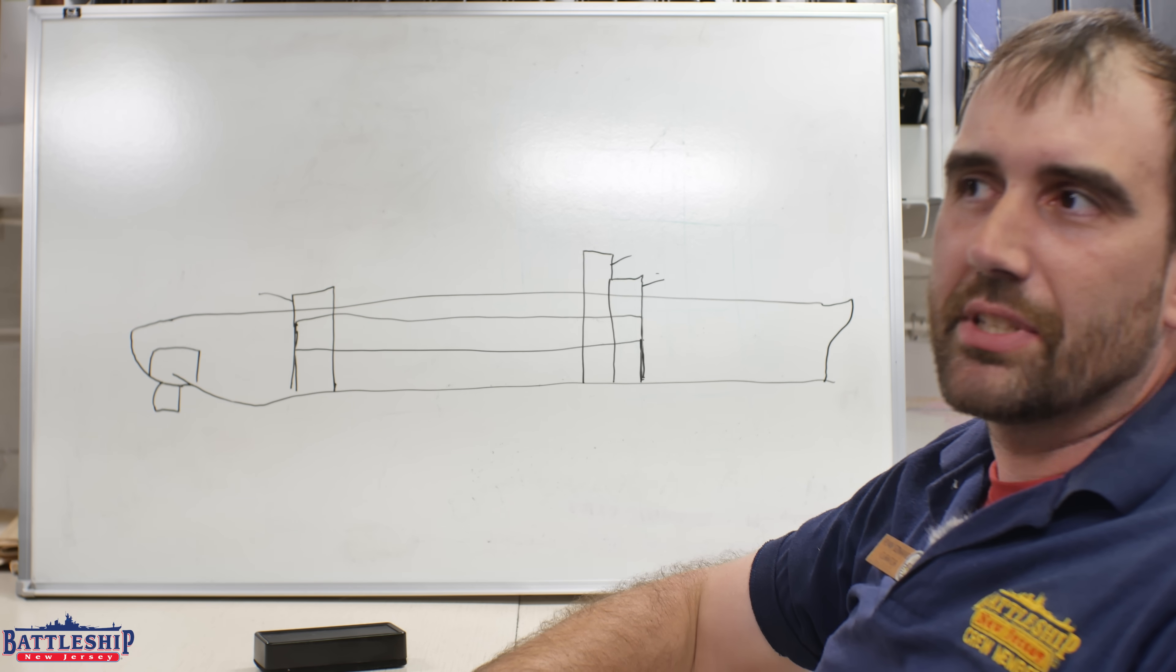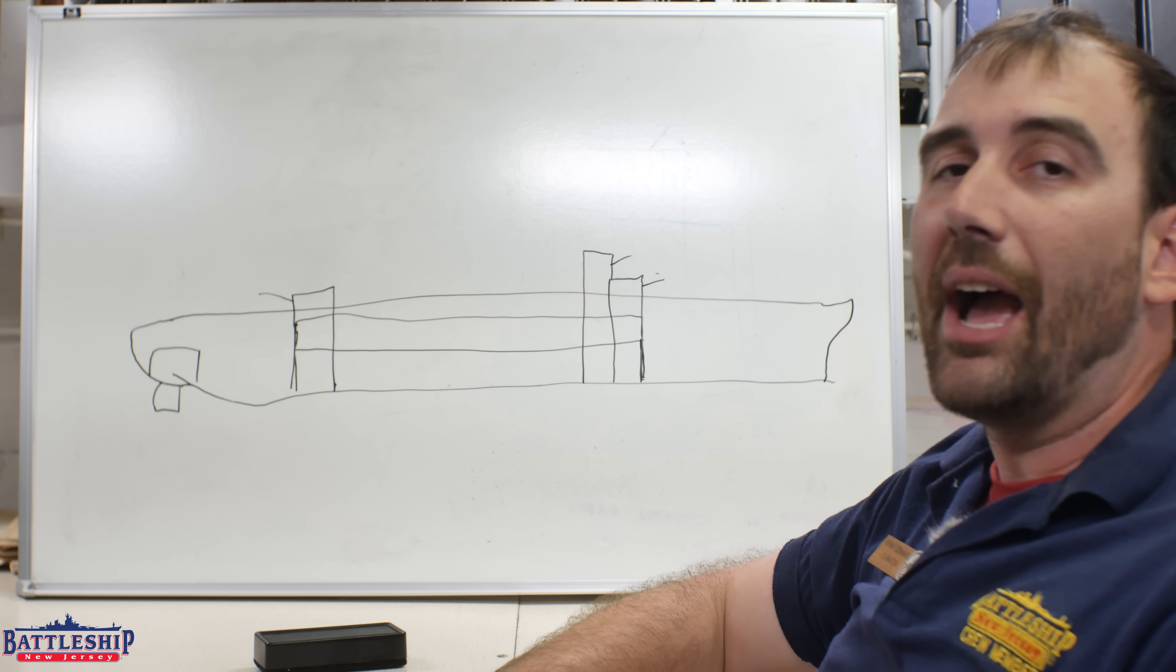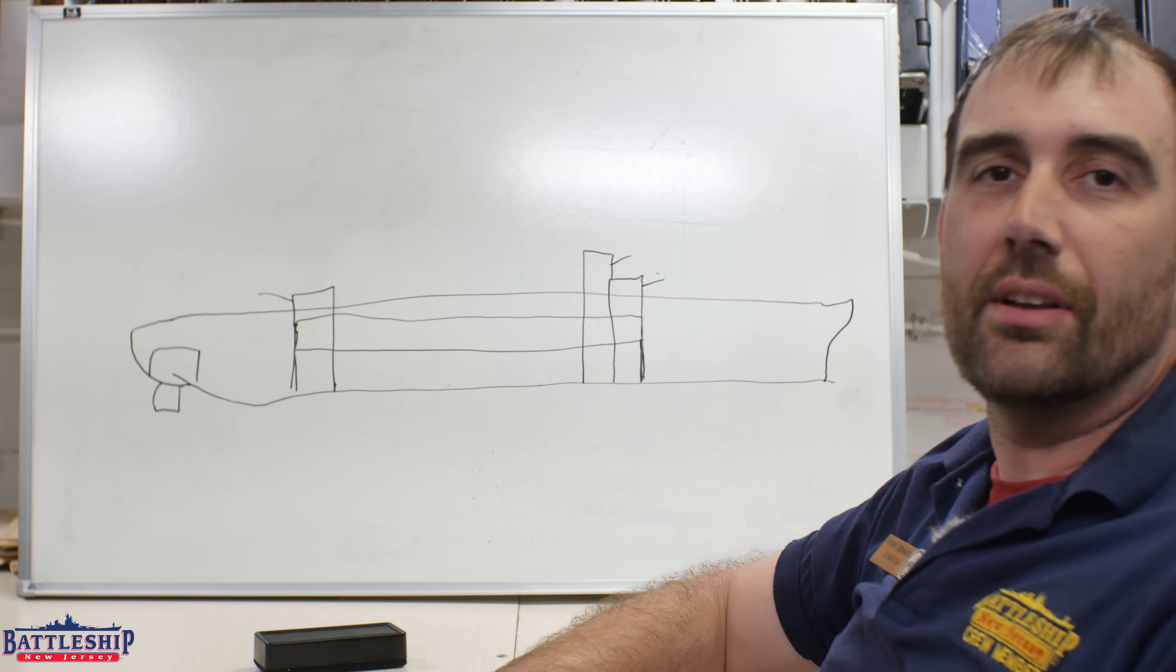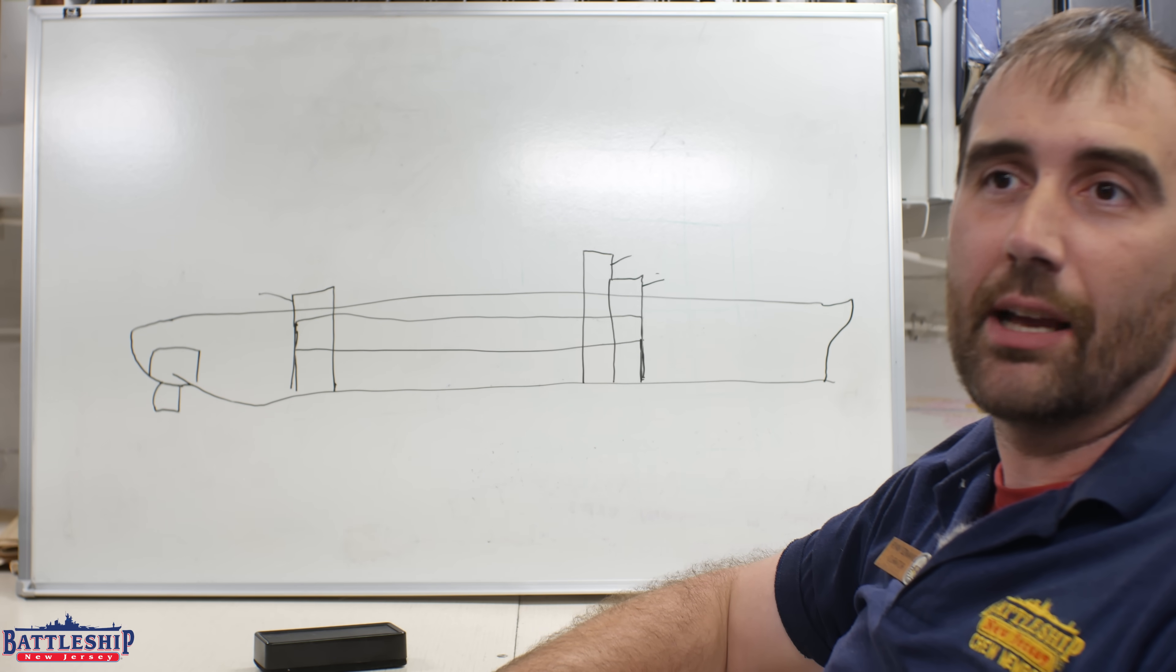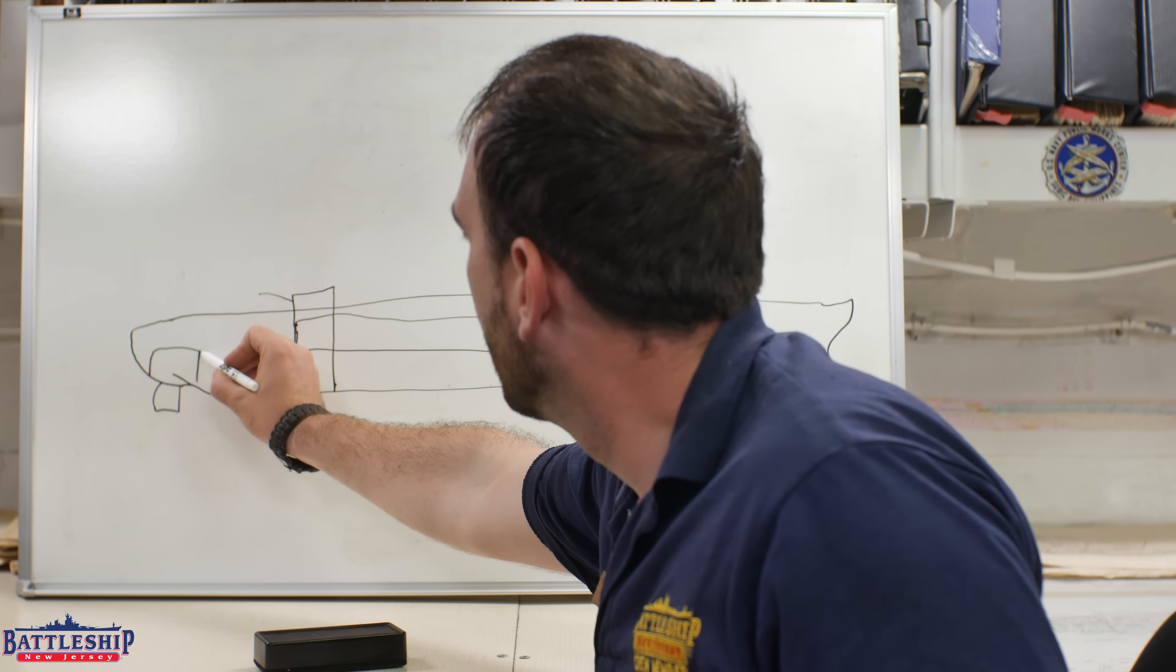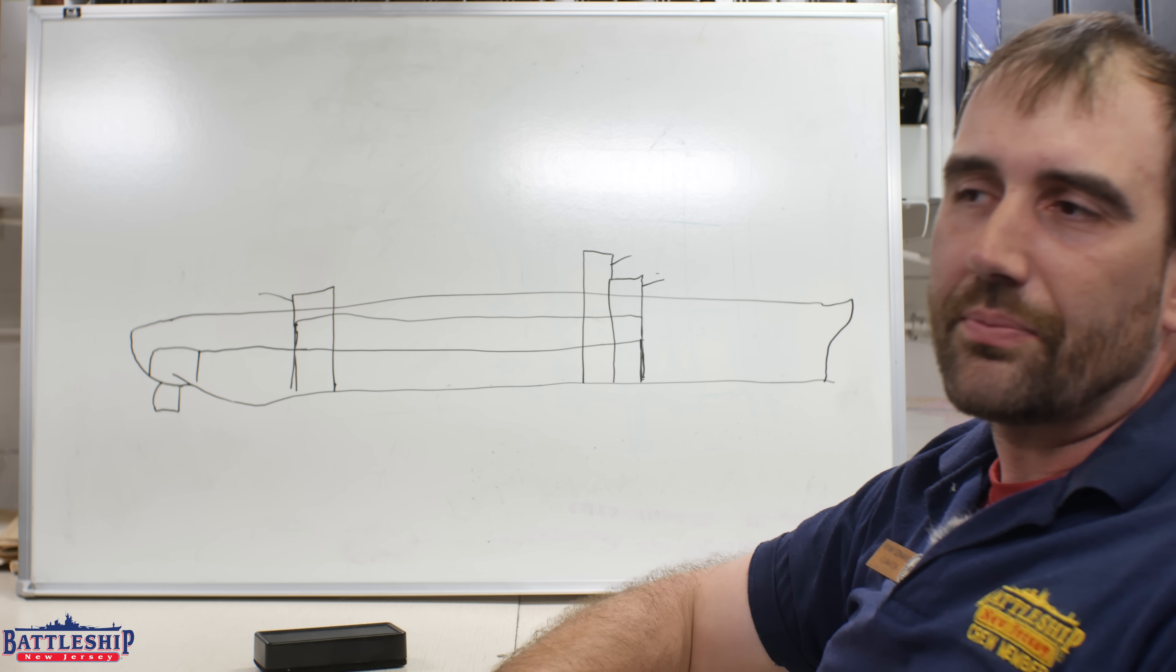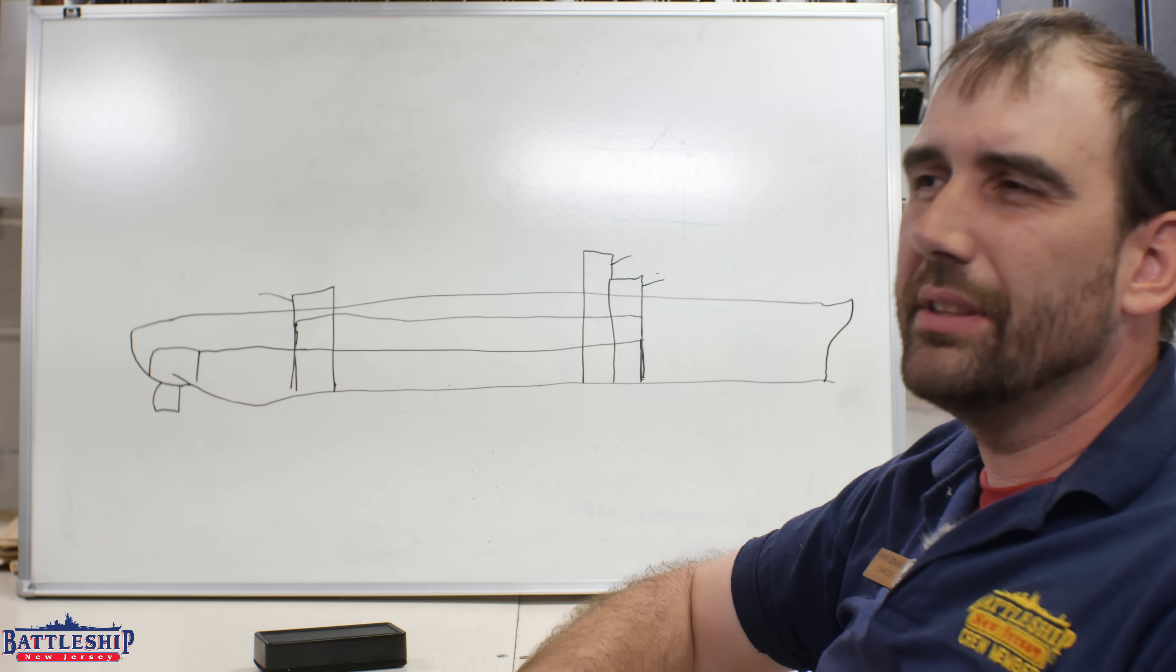For the Iowa-class battleships, they started out originally with this separate armored box. However, because of the Washington Naval Treaty coming to an end, the Navy was able to extend that armored box all the way back to the citadel, except it's one level shorter.